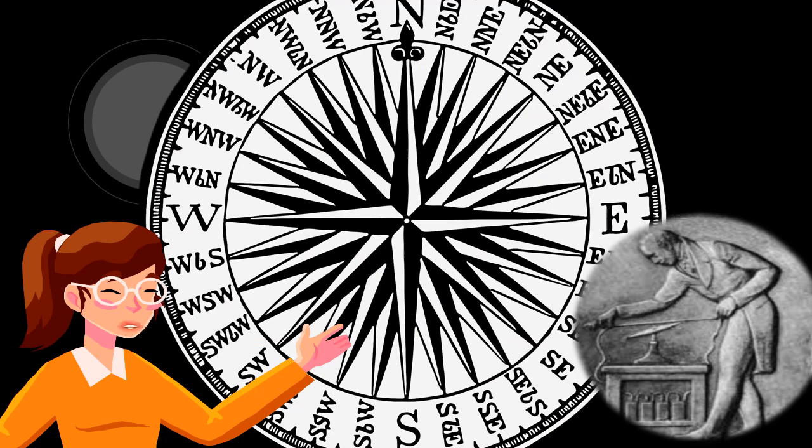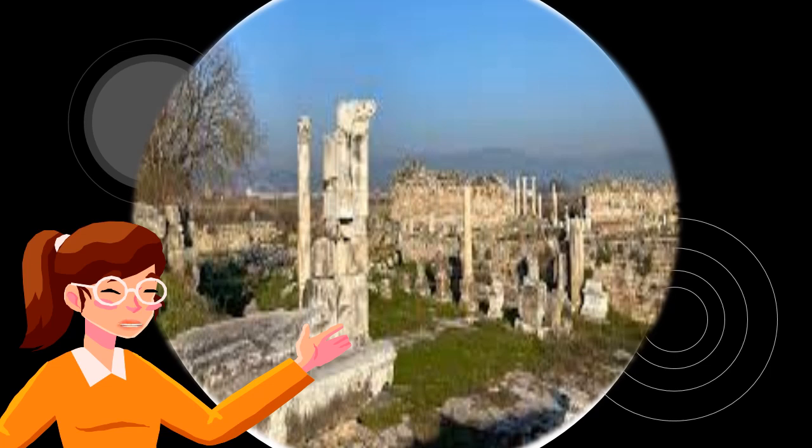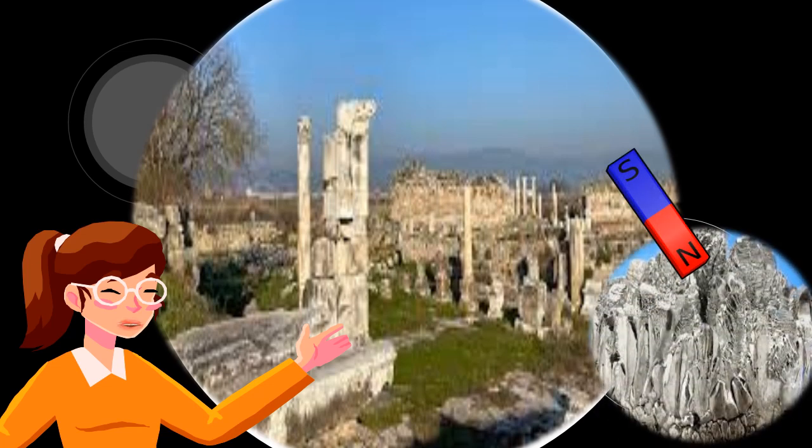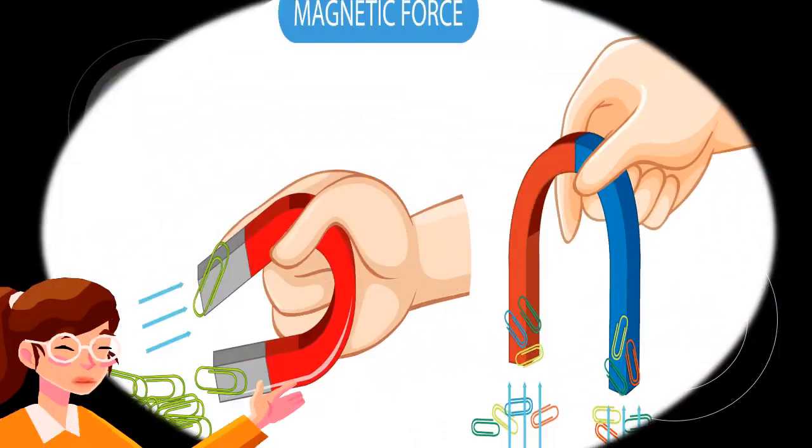When people first discovered magnetic rocks, it's possible that they noticed that some of these rocks were more magnetically drawn to iron or other magnetic rocks than other portions. The poles of a magnet are these regions. A magnet's magnetic pole is the area that attracts other magnets or magnetic materials, such as iron, with the greatest force.